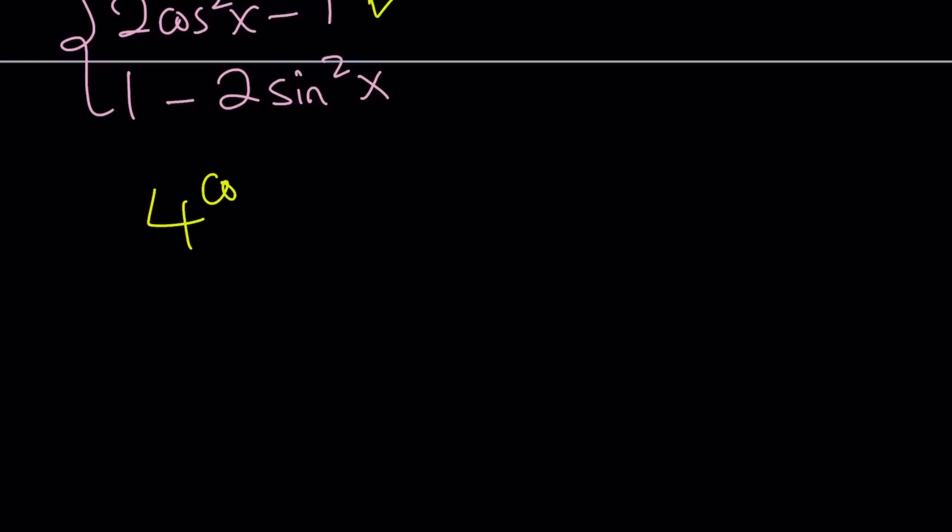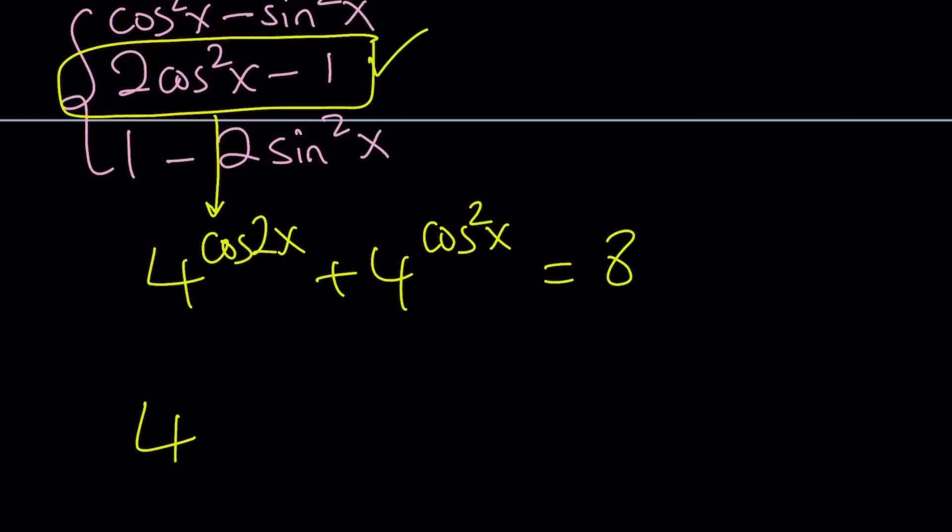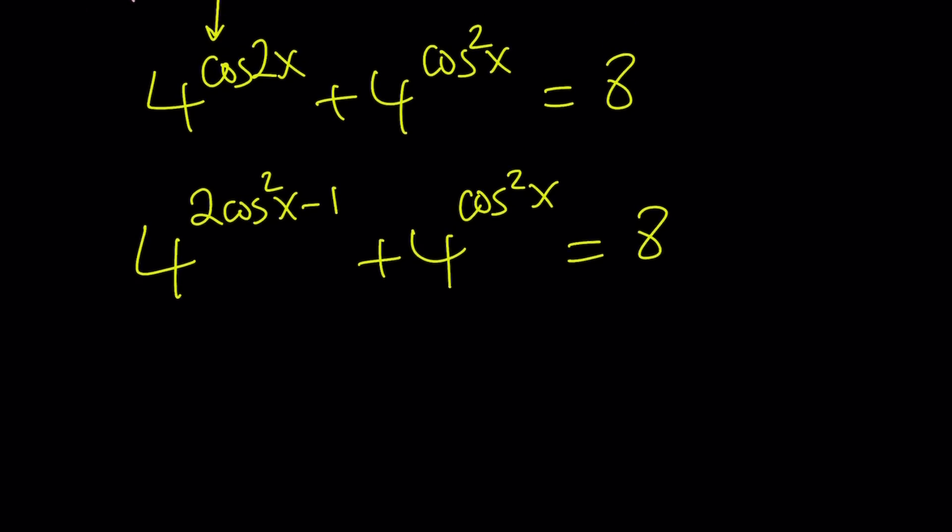Let's rewrite our original problem and then we're going to make the replacements. I'm also going to show you a graph at the end, which is kind of cool. So let's get started. So we have 4 to the power cosine 2x plus 4 to the power cosine squared x equals 8. I know some of you are thinking, hey, this is so easy, I can just plug it in. But we're going to find all the solutions. Let's make sure we do.